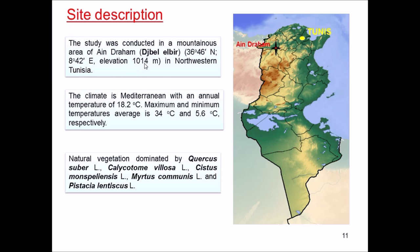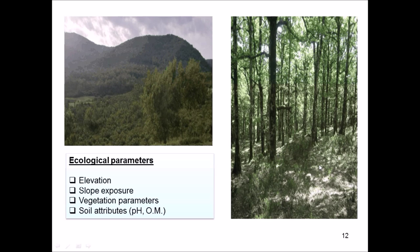The experimental site is a place named Ain Draham in northwestern Tunisia. The natural vegetation is dominated by cork oak — Quercus suber — but we can also find other trees like Calicotome villosa, Cytisus triflorus, Myrtus communis, and Pistacia lentiscus. I studied the effect of ecological parameters like elevation, slope exposure, vegetation parameters, and soil attributes on the distribution of macro fungi in that forest.